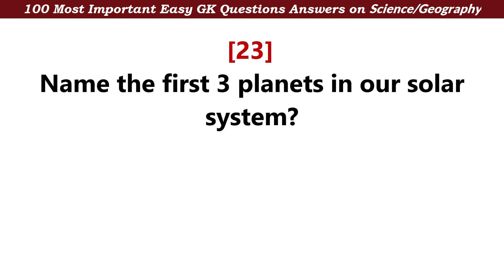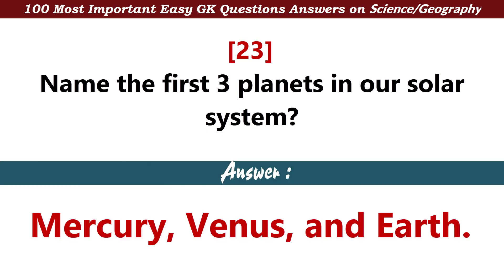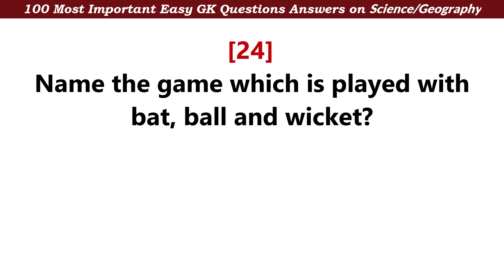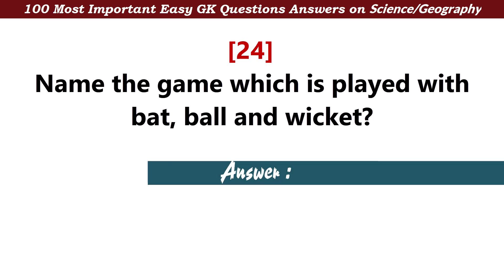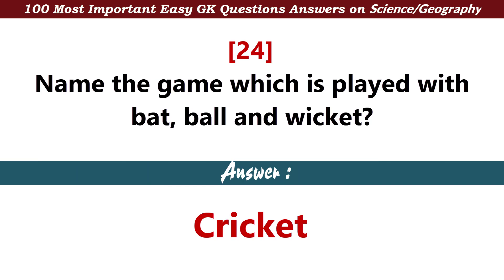Name the first three planets in our solar system — Answer: Mercury, Venus, and Earth. Name the game which is played with bat, ball, and wicket — Answer: Cricket.